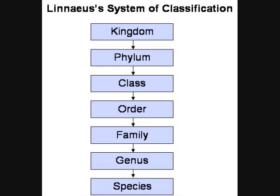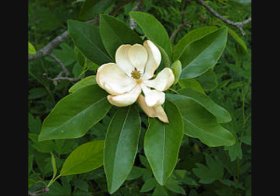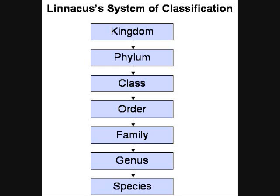An order contains related families. A class contains related orders. A phylum or division contains related classes. The term division is used instead of phylum for the classification of bacteria and plants. Some scientists break the commonly used taxa into subcategories such as subspecies, subfamilies, infraorders, and subphyla.